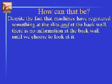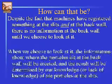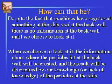Let me summarize what's called the Copenhagen Interpretation of Quantum Mechanics — the standard interpretation for the last 75 years, fixed in 1927. Despite the fact that the machine has registered something at the slit and at the back wall, there is no information at the back wall until we choose to look at it. When we choose to look at it, the information about where the particles hit will be resolved. The result will be different depending on our knowledge or lack of knowledge of the position of the particles at the slit.